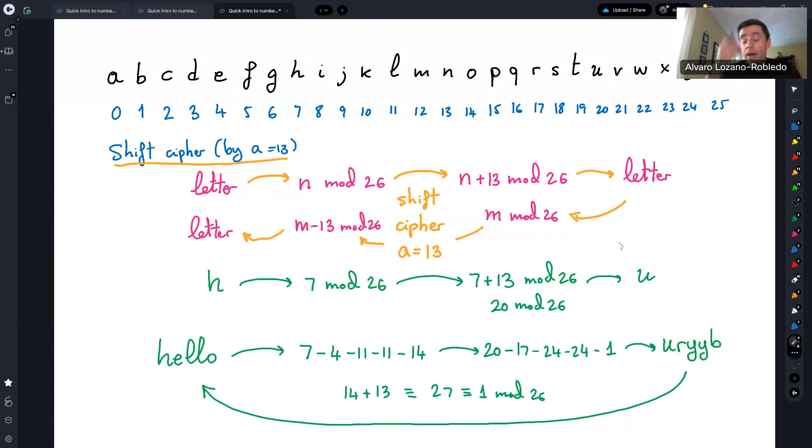There are better ways of doing this. We will learn about other methods that improve on this so that at every letter you're using a different shift cipher. And that's called Vigenere cipher. And it's a slightly better or an improvement of this method.